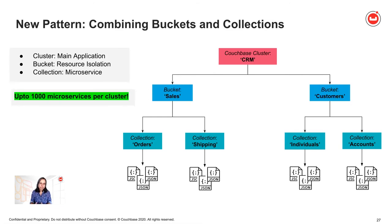Another possibility is that you may have microservices that are related to a higher-level application. You may want to put those together in a bucket, since the bucket is still the physical resource allocation unit. If you want to give more RAM to a certain set of microservices or bump up CPU priority, you would do that at the bucket level. For example, orders and shipping collections could be in a sales bucket, separate from individuals and accounts in a customers bucket. Really, there is a lot of flexibility in how you want to organize data for your microservices using these patterns.